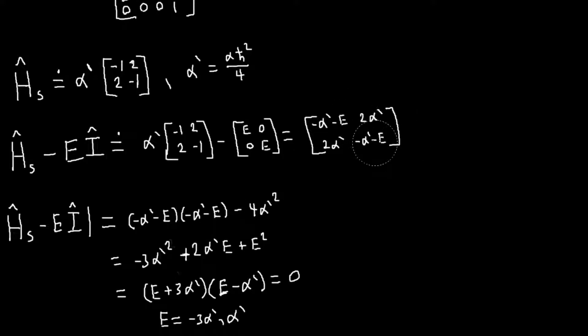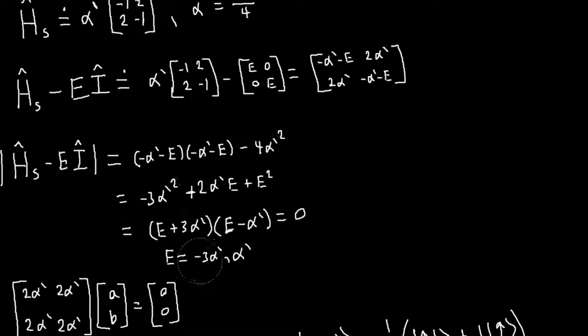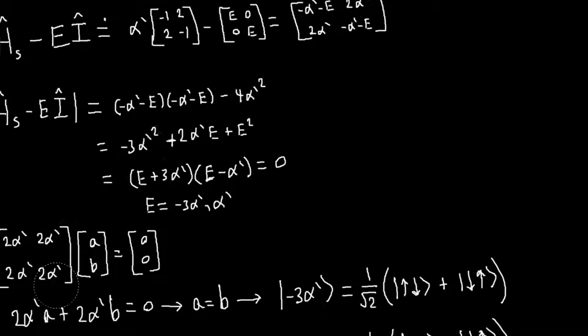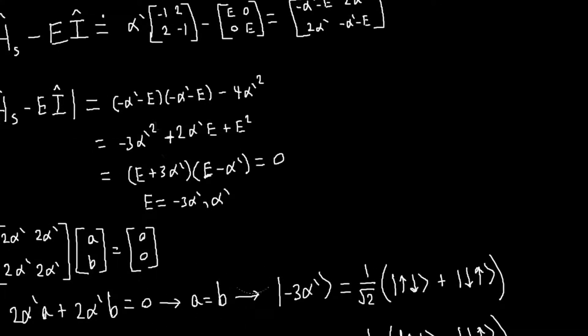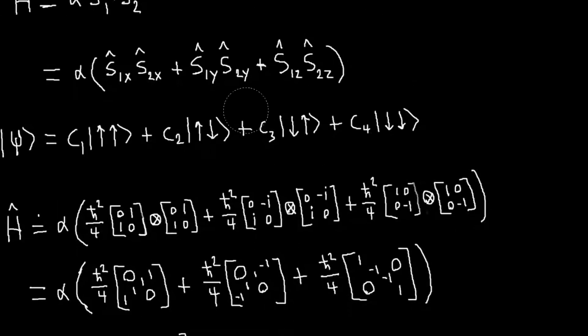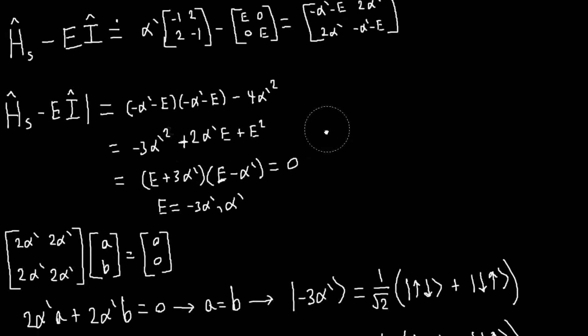And then we just have to go back to this matrix and plug in each of these values. So the first one I'll do is the minus three alpha prime. So if I plug that in, these diagonal terms will become a plus two alpha prime. And that leads me to this equation, which is two alpha prime a plus two alpha prime b equals zero. So a equals b. And that just tells me that my eigenstate will just be a state with an equal combination of these two vectors.